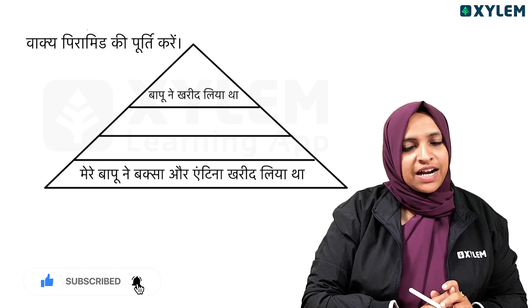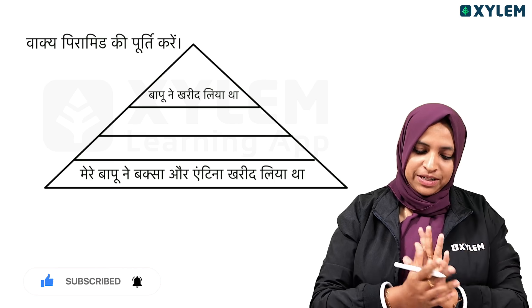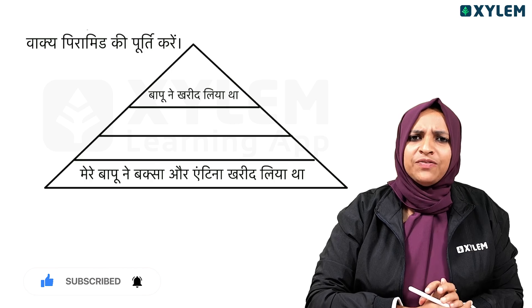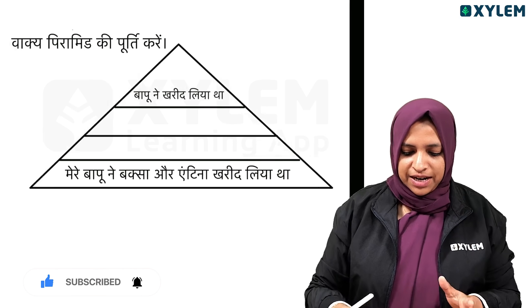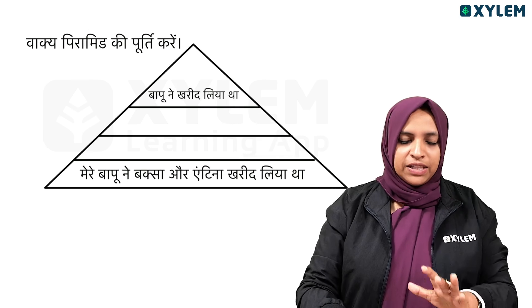It's called Word Pyramid. We have two types of word pyramid. There are two sentences — one sentence.